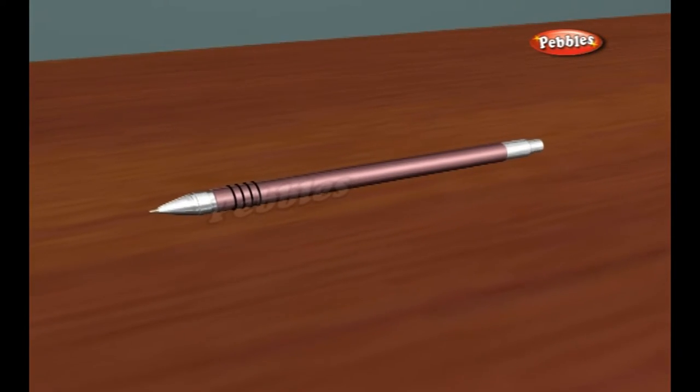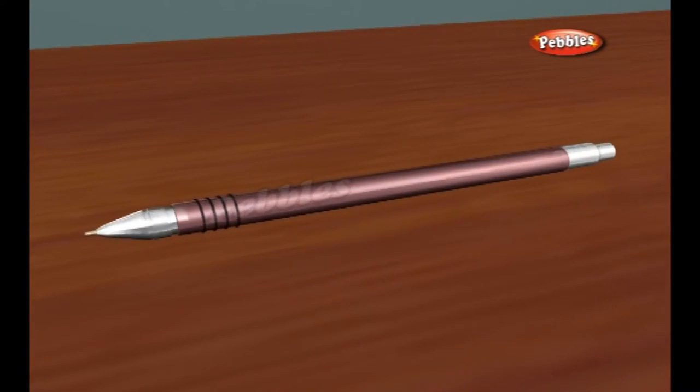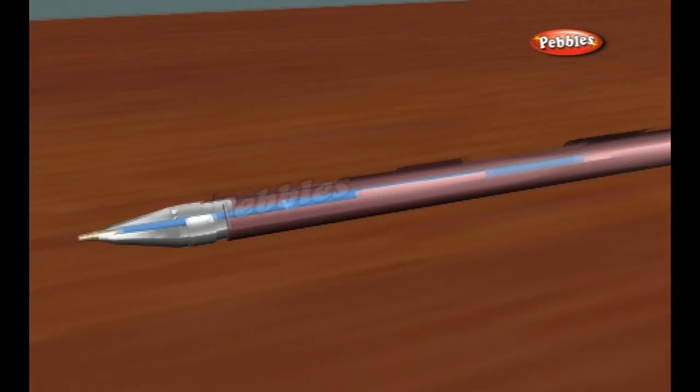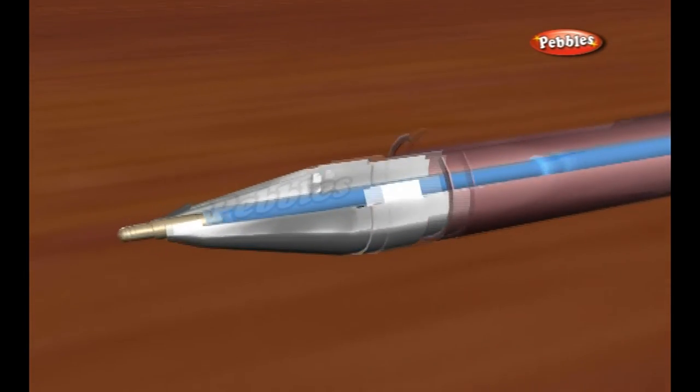The tiny ball is held in a socket and the back of the ball is exposed so it can pick up ink from the reservoir. This ball acts as a buffer between the material you are writing on and the quick drawing ink inside the pen.